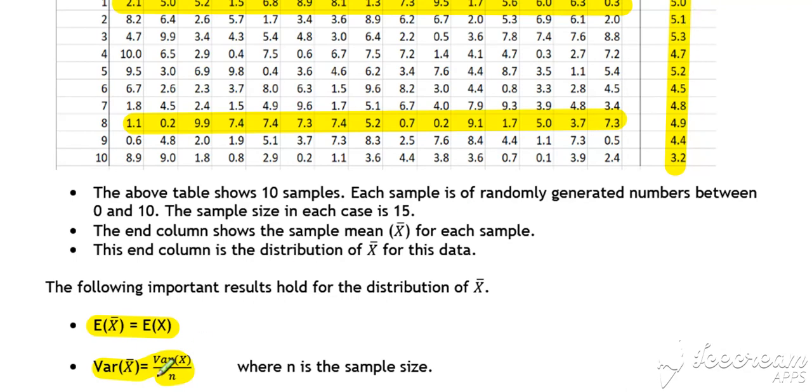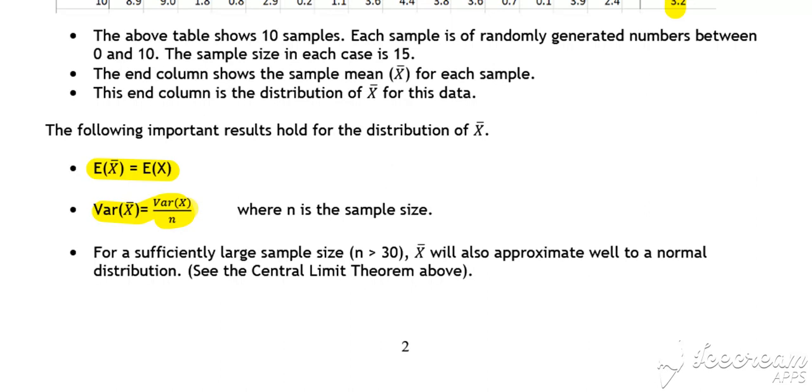And it is always true that the variance will actually be reduced by a factor of N. So that result above holds for all situations where we have found the distribution of X bar rather than the distribution of X. And to fully complete the definition of the central limit theorem, the central limit theorem is a good approximation when we have a large value of N.